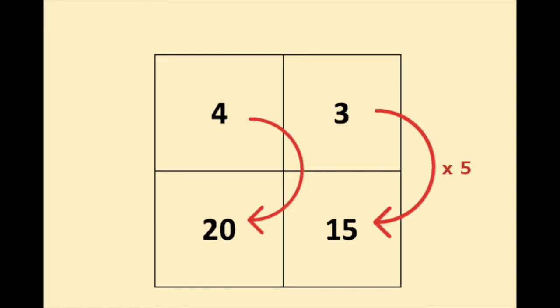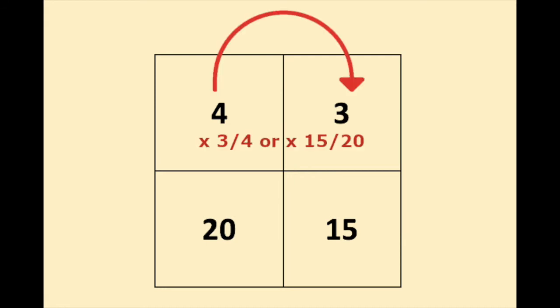4 times something is 20. That is, of course, 5. So 3 times 5 is also 15. And finally, if I want to go from 4 to 3, I multiply by 3 over 4. So we have always horizontally and vertically the same ratios. And this is the characteristic of a ratio box.